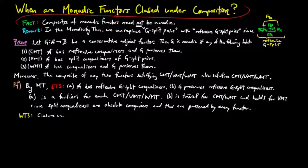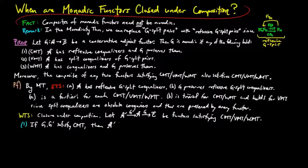Next, we want to show closure under composition. So let g' and g be compatible functors, which satisfy CMT, VMT, WMT, respectively. One, if g and g' satisfy CMT, then the category A' has reflexive co-equalizers, and g, g' preserves them, since g and g' each preserve them. And an image of a reflexive pair is a reflexive pair.